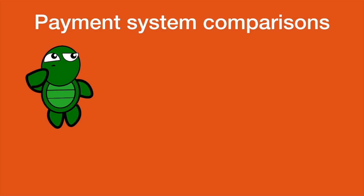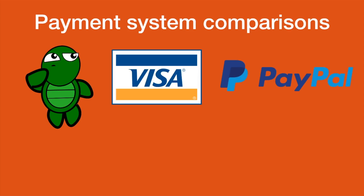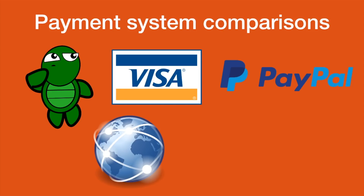To better understand the scalability problem, let's compare Bitcoin to other payment systems. Bitcoin is actually pretty slow — it processes 3 to 7 transactions per second, compared to Visa and PayPal which handle 4,000 to 65,000 transactions per second at max capacity. So if Bitcoin wants to be more than a censorship-resistant store of value and wants to be massively adopted at a worldwide scale, it has to up its game. That's why SegWit was the first step, and Lightning Network comes right after it.